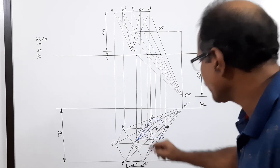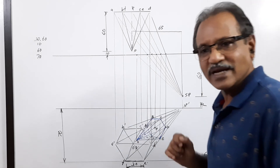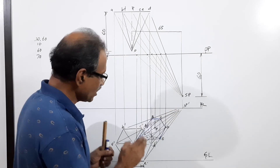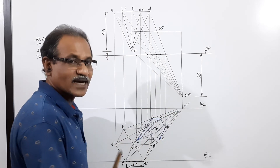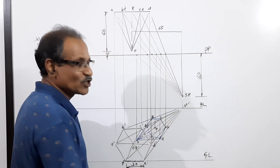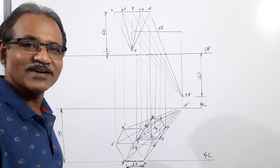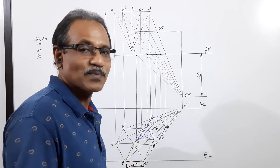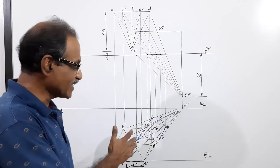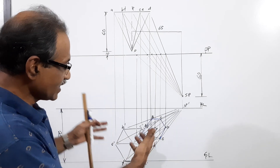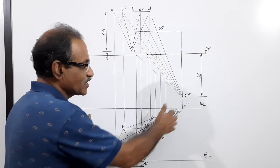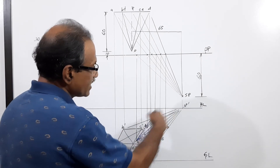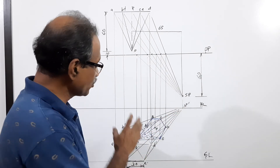One note about the drawing: you must join all points of the elevation to SP-dash with very light lines. In my case those lines appear darker because I used black for the elevation and blue for the perspective. When you draw with a pencil, the construction lines to SP-dash should be very light so the final perspective looks clear and impressive.